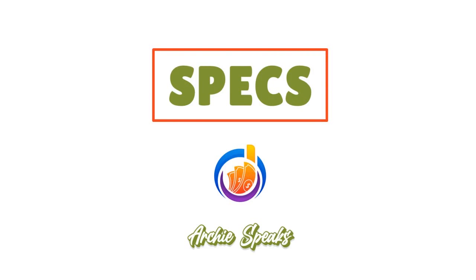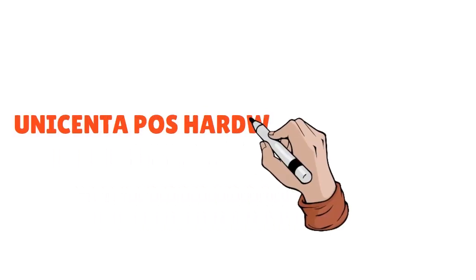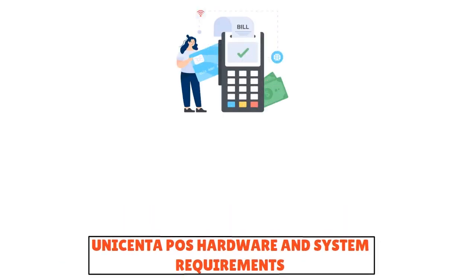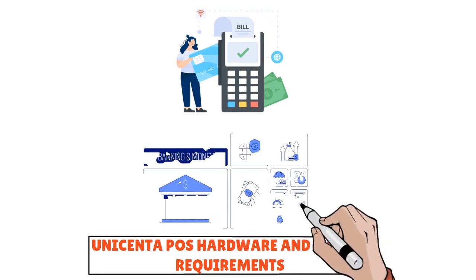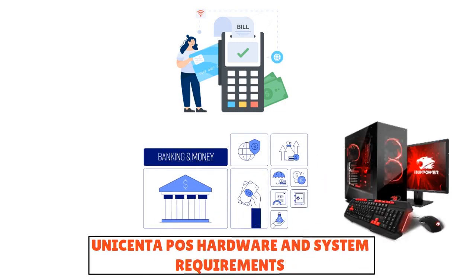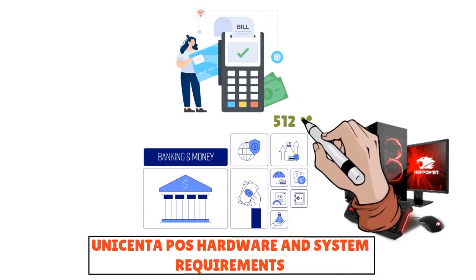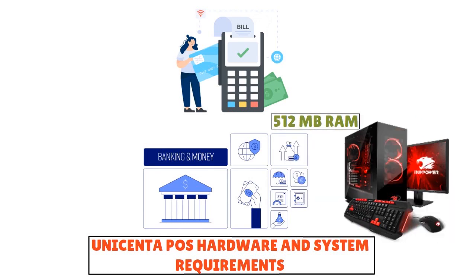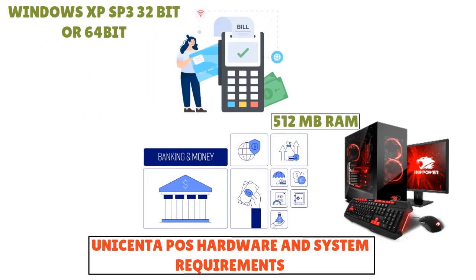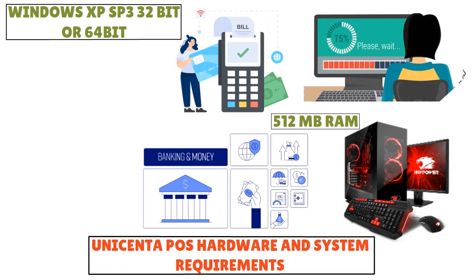Let's talk about the specs. Unicentor POS is designed to run on almost any third-party software, saving you money on hardware costs. The computer needs at least 512 megabytes of RAM and 70 megabytes of hard disk space. If running on Windows XP SP3 32-bit or 64-bit, you need Java 1.7 JRE. For 32-bit or 64-bit Windows 7 or 8, you need Java 1.8 JRE installed.